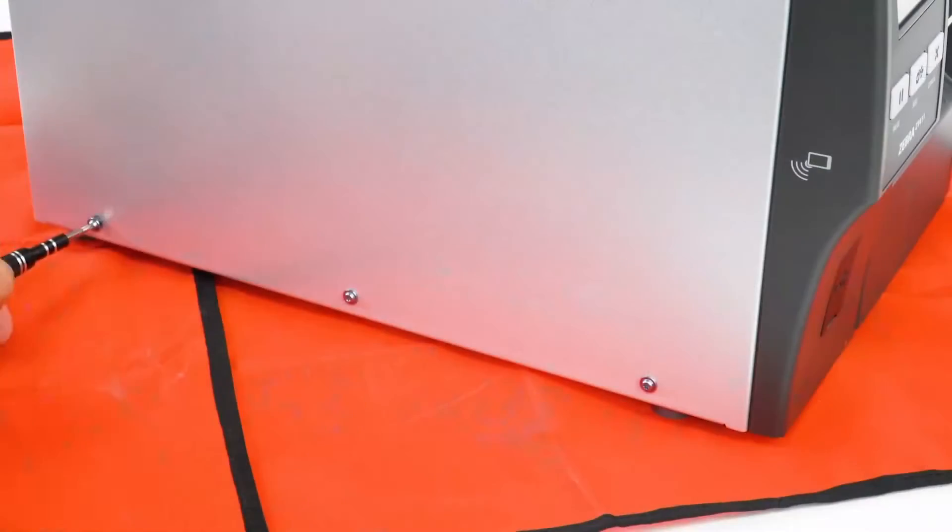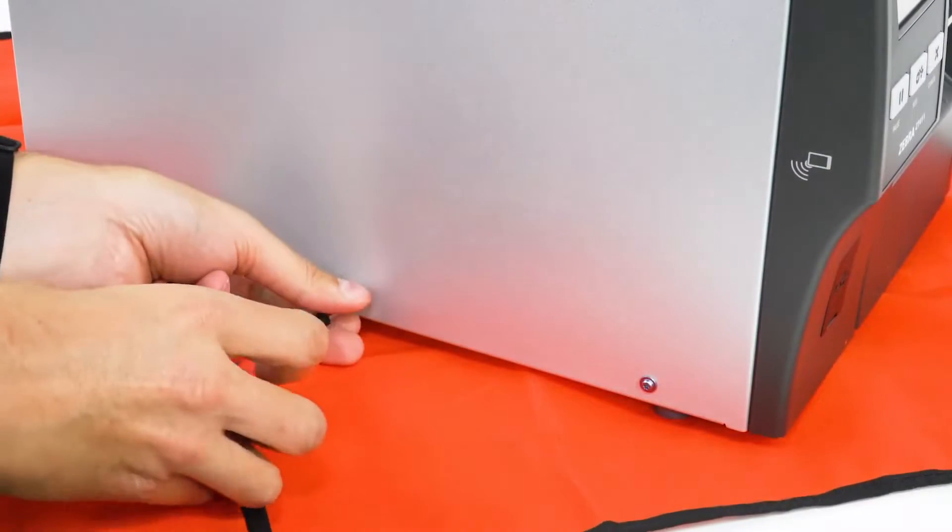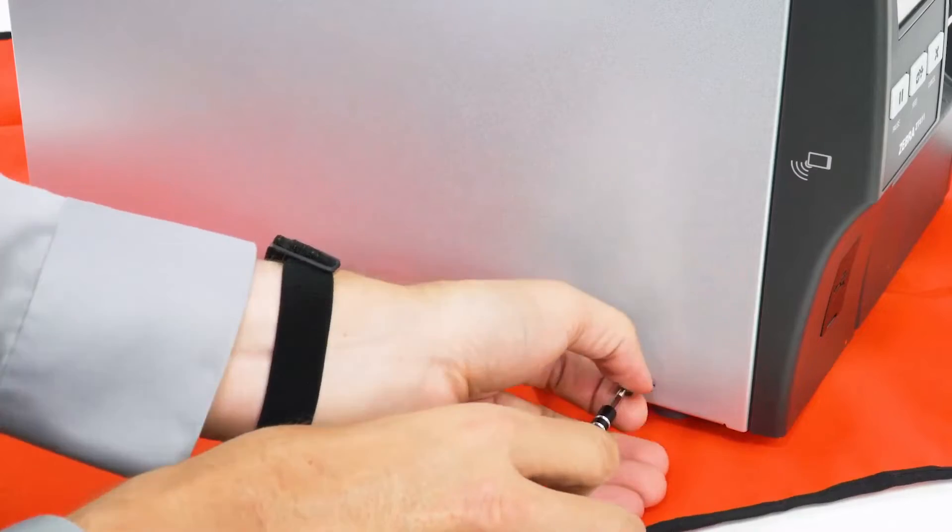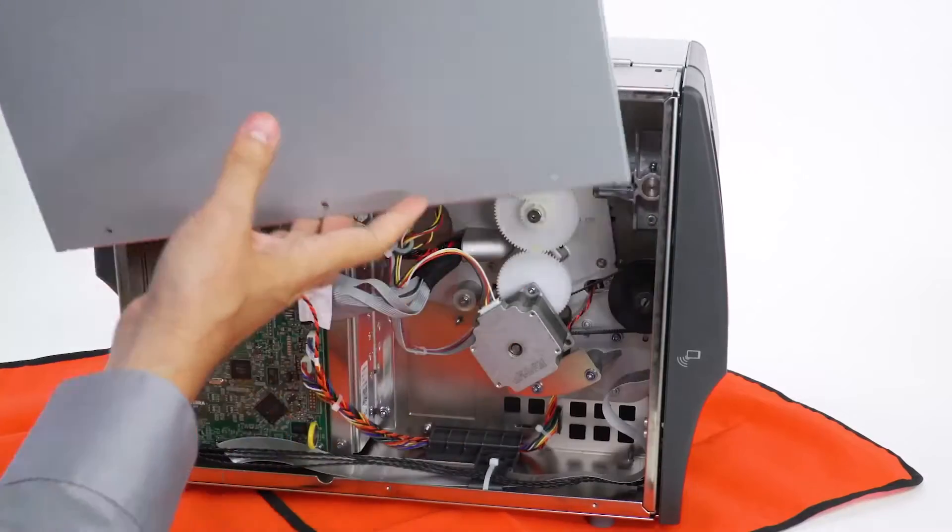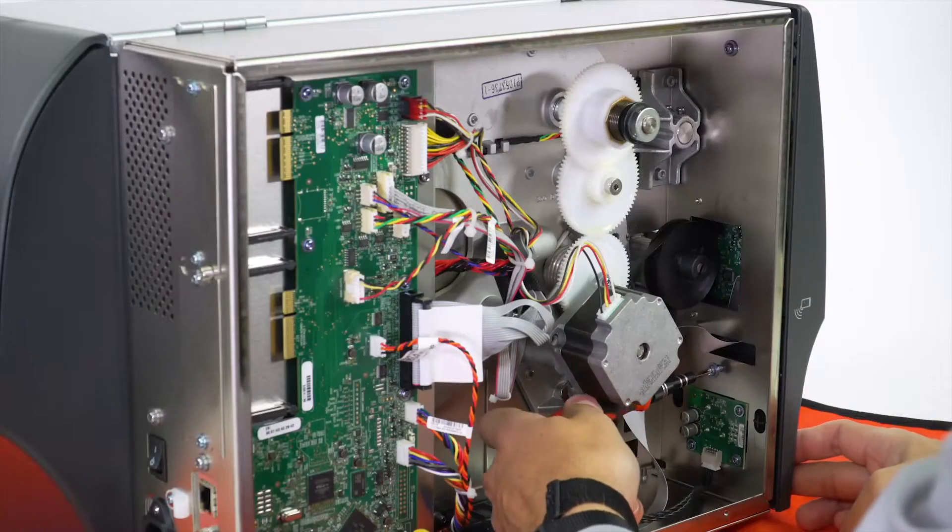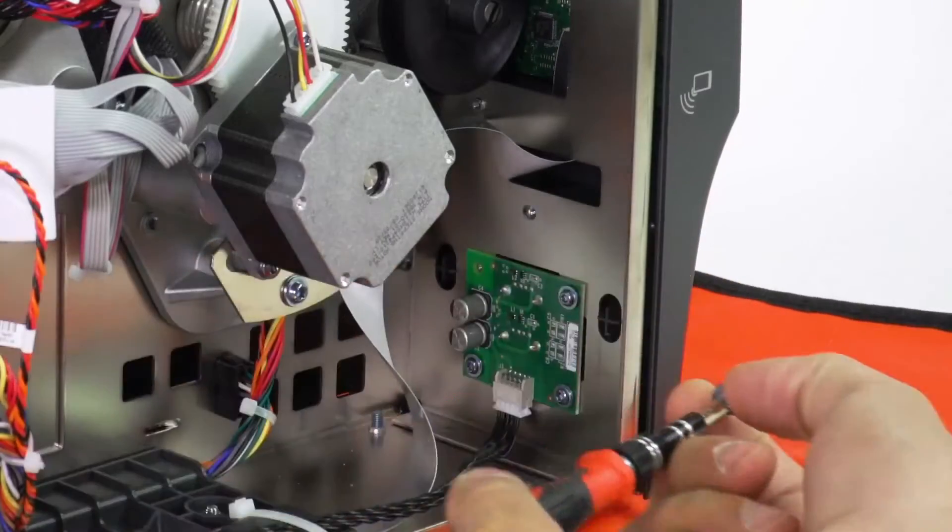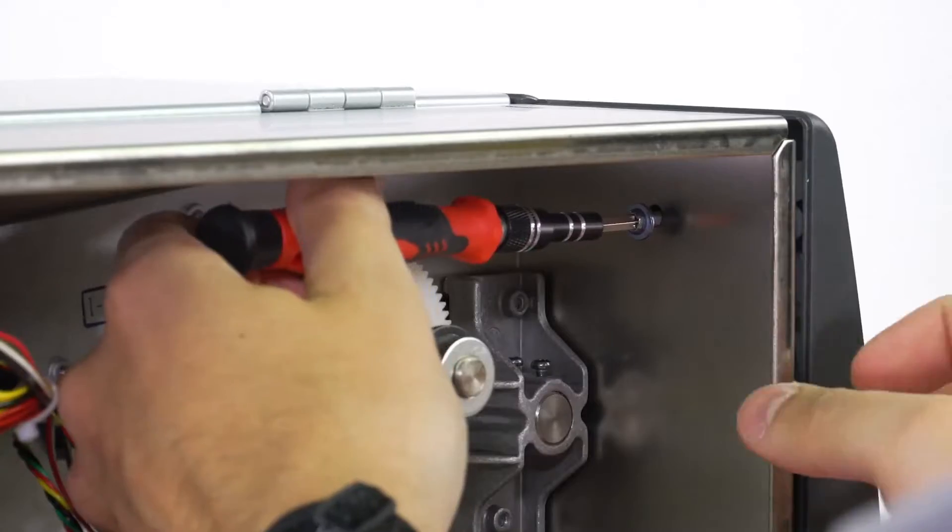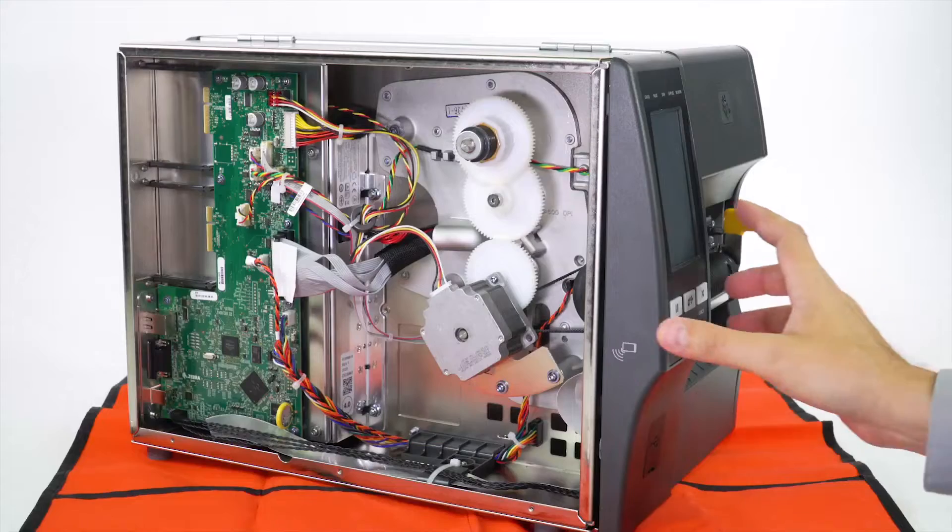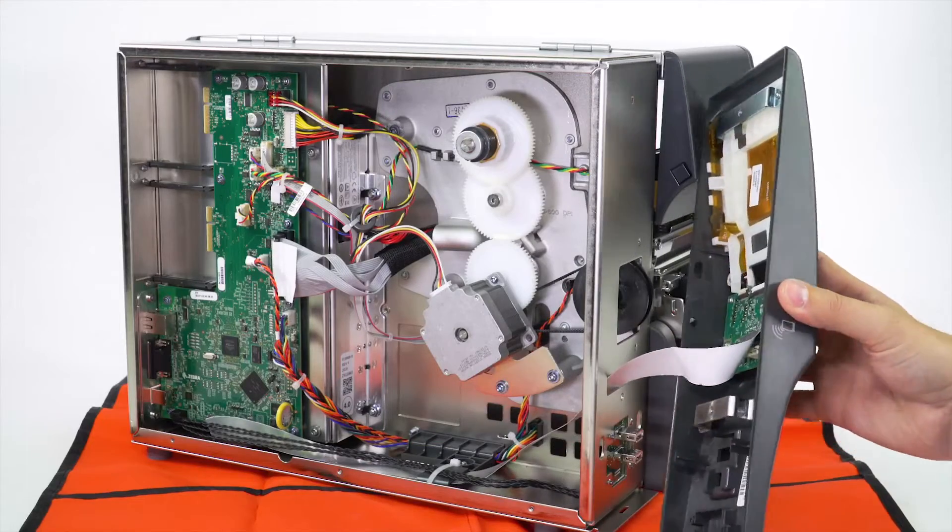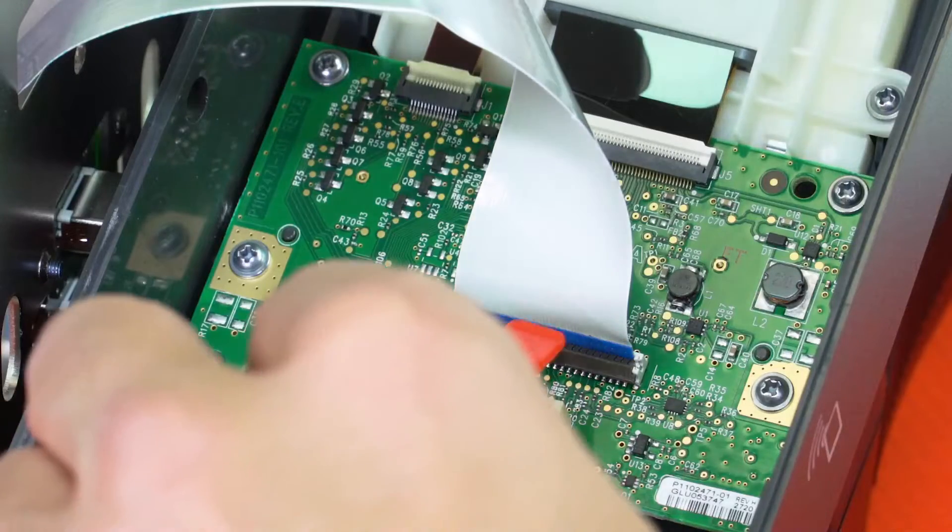Remove the four electronics panel screws. Remove the electronics panel. Remove the control panel screws. Remove the control panel. Unlock and disconnect the ribbon cable.